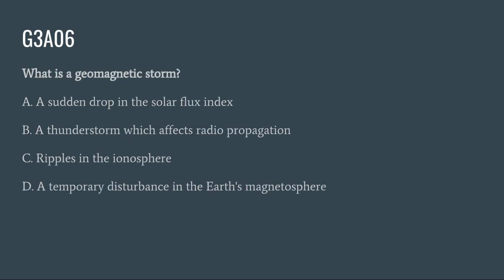G3A06: What is a geomagnetic storm? A. A sudden drop in the solar flux index. B. A thunderstorm which affects radio propagation. C. Ripples in the ionosphere. Or D. A temporary disturbance in the earth's magnetosphere. The correct answer is D: a temporary disturbance in the earth's magnetosphere.